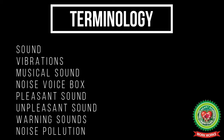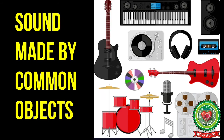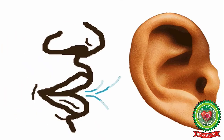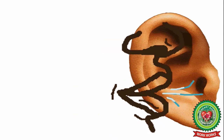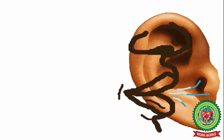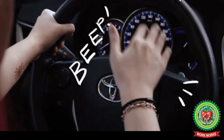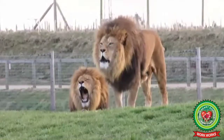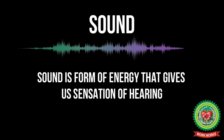So students, open your book at page 95 — Sounds Made by Common Objects. We hear different types of sounds in our everyday life, like music, people talking, honking of horns, chirping of birds, and sounds made by different animals. So what is sound? Sound is a form of energy that gives us the sensation of hearing.